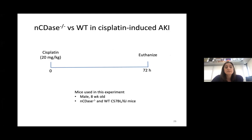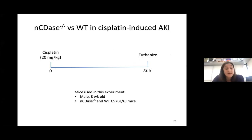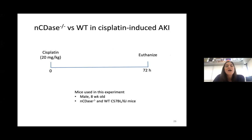We obtained neutral ceramidase knockout mice from Ashley Schneider, who had the Ric Proia-generated neutral ceramidase knockout mice crossed fully onto the C57 background. We looked in wild-type and knockout mice — and actually the heterozygotes as well — in male mice at eight weeks of age. We've also done female mice, and we looked at cisplatin-induced injury at 72 hours.